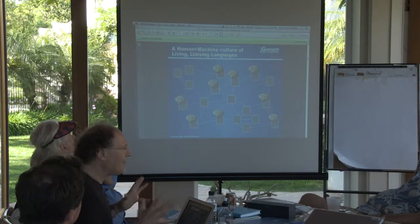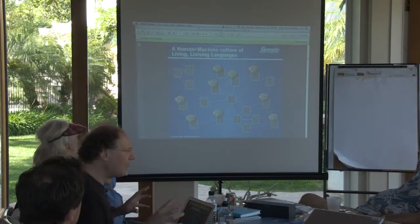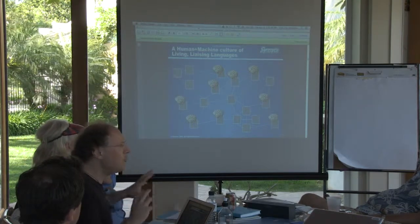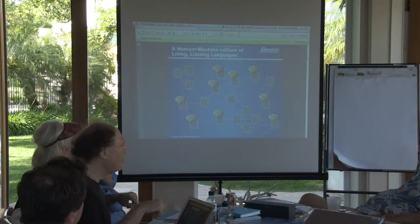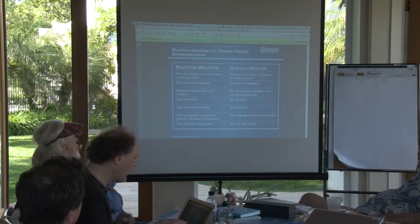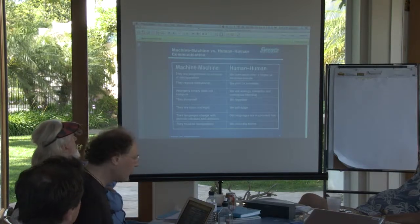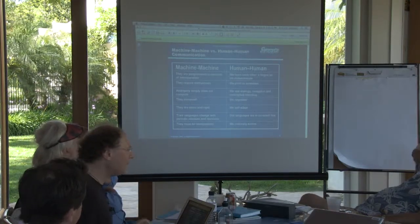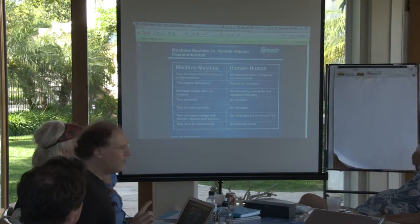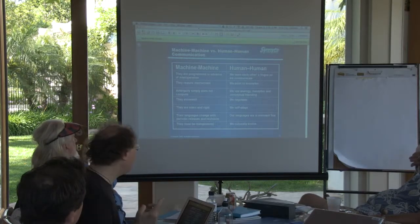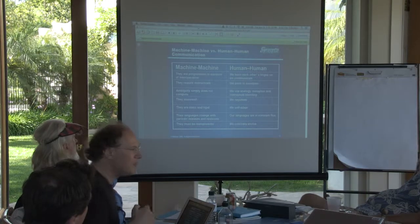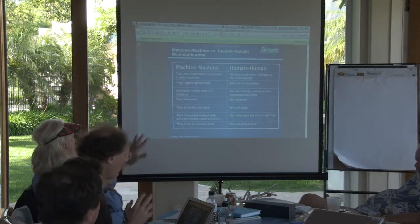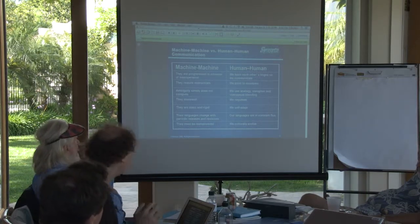Slide 11: we basically have a co-mingling of automated systems and humans, and humans who are communicating intermediated through computing environments. Slide 12: there are key differences between interoperability between humans and interoperability between machines, and this is worth spending a moment on.